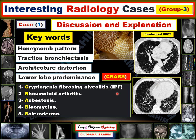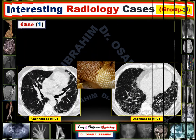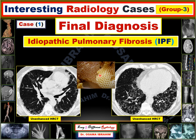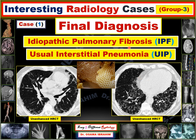The final diagnosis of this case is idiopathic pulmonary fibrosis. It has another name: usual interstitial pneumonia, or UIP — a pathological term also commonly used in exams. This is the final diagnosis for the first case, referred to as either UIP or IPF.